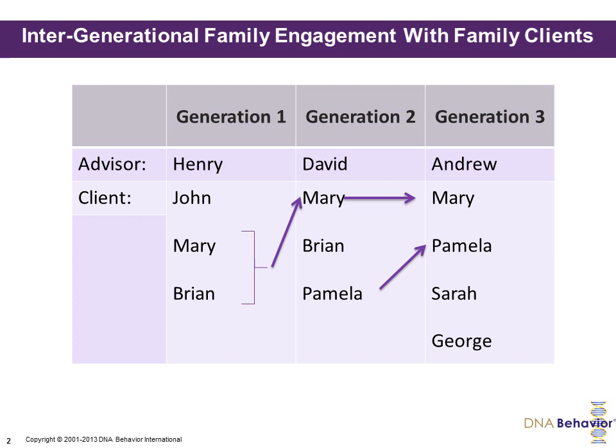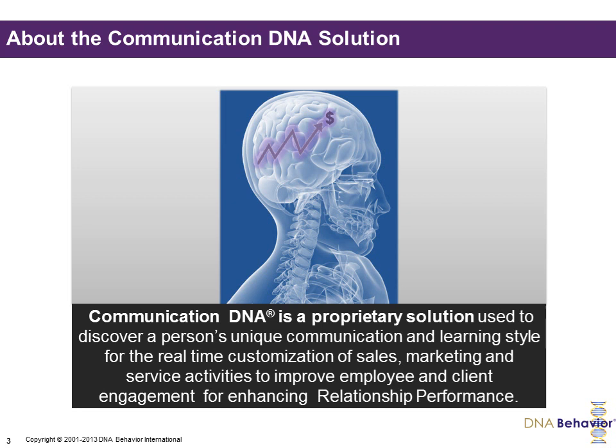This graph highlights the three generations, with the advisors being Henry, David and Andrew, and the clients, and how there's been a shift in client relationships over time. What's important to recognise is that the advisory firm as a whole needs to know all of the family members if they're going to keep them engaged. Because when there are transition events such as inheritance, business sales, or money moves within the family, a relationship could potentially get lost. So it's important for the firm to know all of their clients and all of the family members and keep them more engaged.